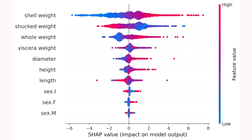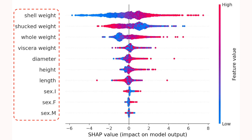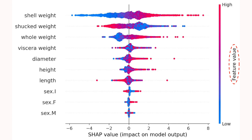The other plot is the beeswarm plot. This is a plot of all SHAP values. On the y-axis, the values are grouped by the different features in the model. For each group, the color of the point is determined by that feature's value. Now let's see how the new SHAP plots compare to these.